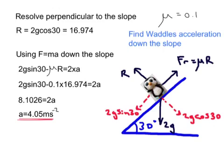We start by resolving perpendicular to the slope. The reason we do that here is we want to find R, because later on in the question we're probably going to be using it in friction is μR. So good practice is always to do that first.